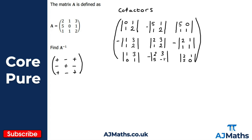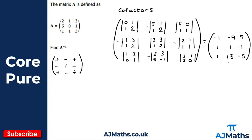We've got nine 2x2 determinants to evaluate individually. I've already evaluated these to save time, but make sure you can do this by hand. The results are: top row: −1, −9, 5; middle row: 1, 1, −1; bottom row: 1, 13, −5. That gives us our 3x3 cofactor matrix.